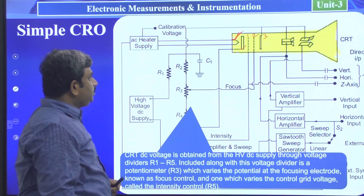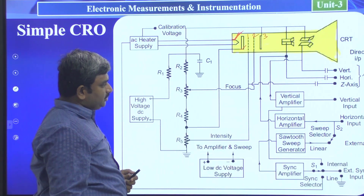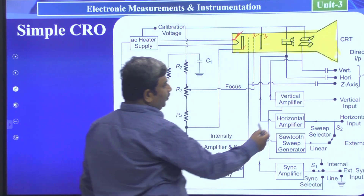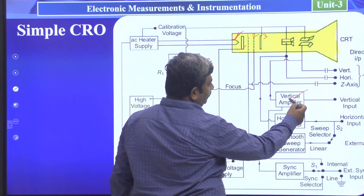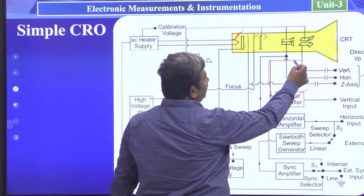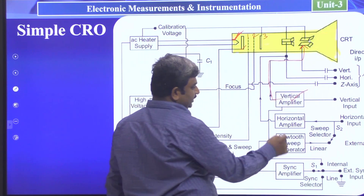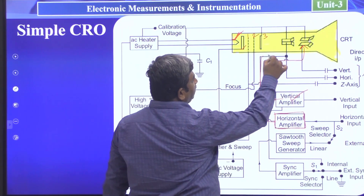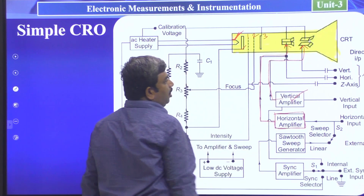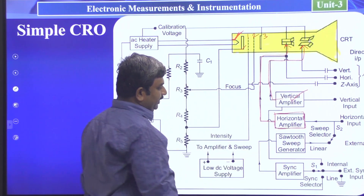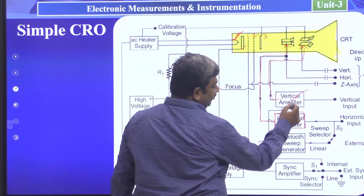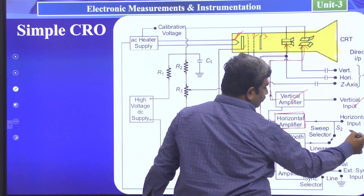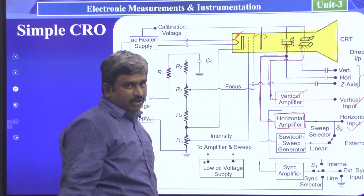Now looking at the block diagram more clearly: here we have a vertical amplifier, which is connected to the vertical deflection plates. This is the horizontal amplifier, connected to the horizontal deflection plates. For the vertical amplifier we have a vertical input; for the horizontal amplifier we have a horizontal input.